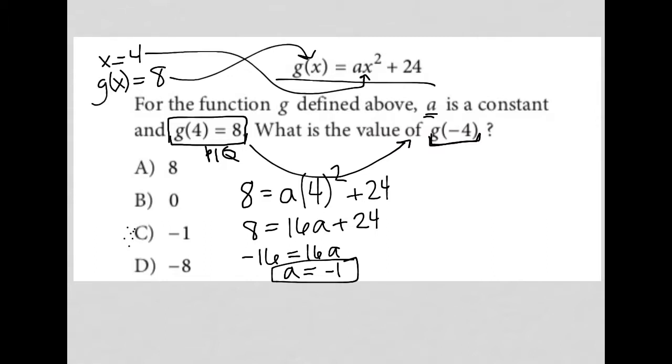So that means I am trying to find g(-4) is equal to - well, a is -1, which I know. x is the -4 that's inside the parentheses because whatever's inside parentheses for functions is always the x value. So -1 times (-4) squared plus 24.